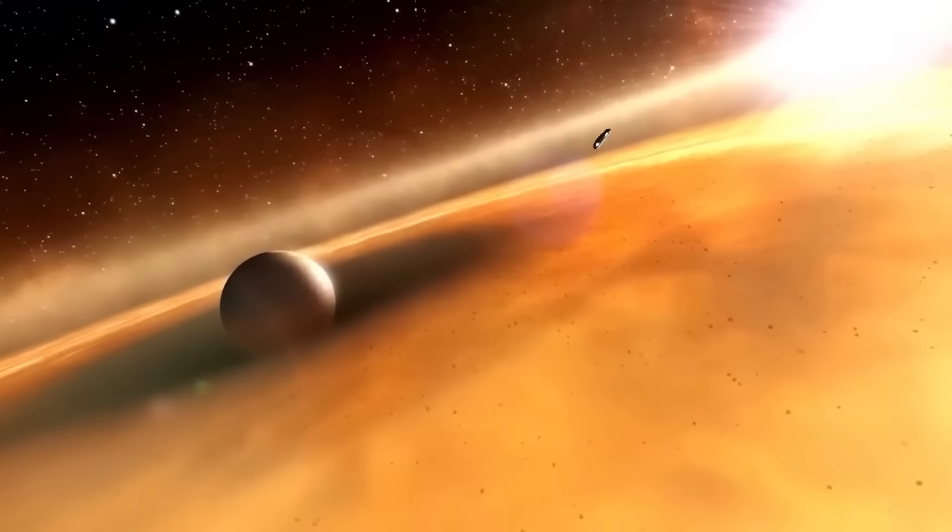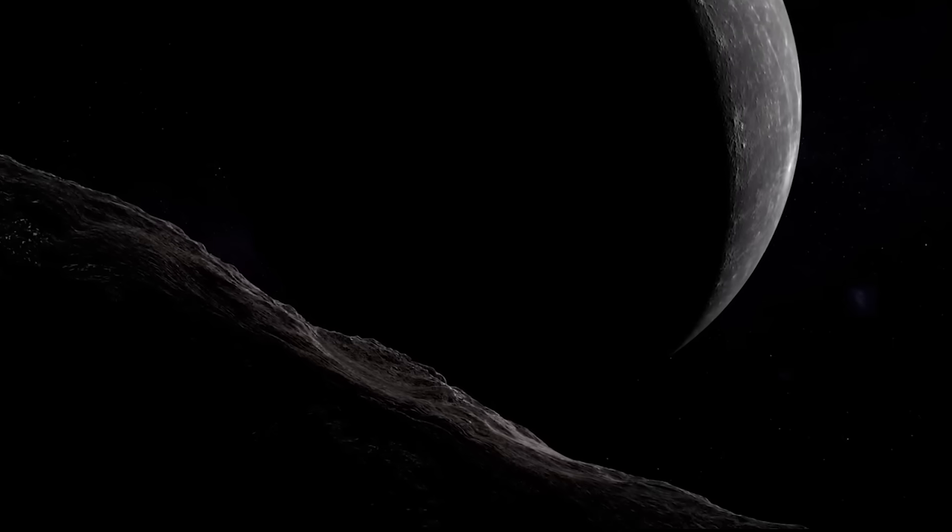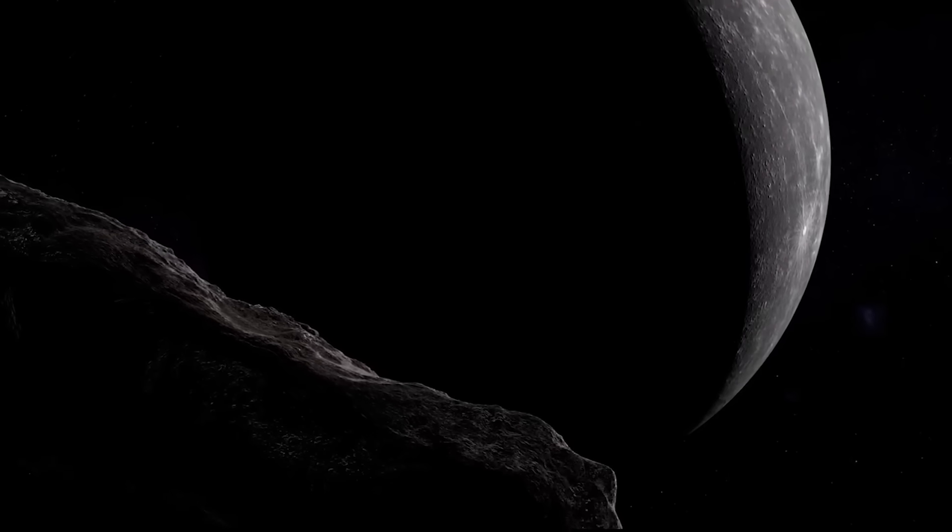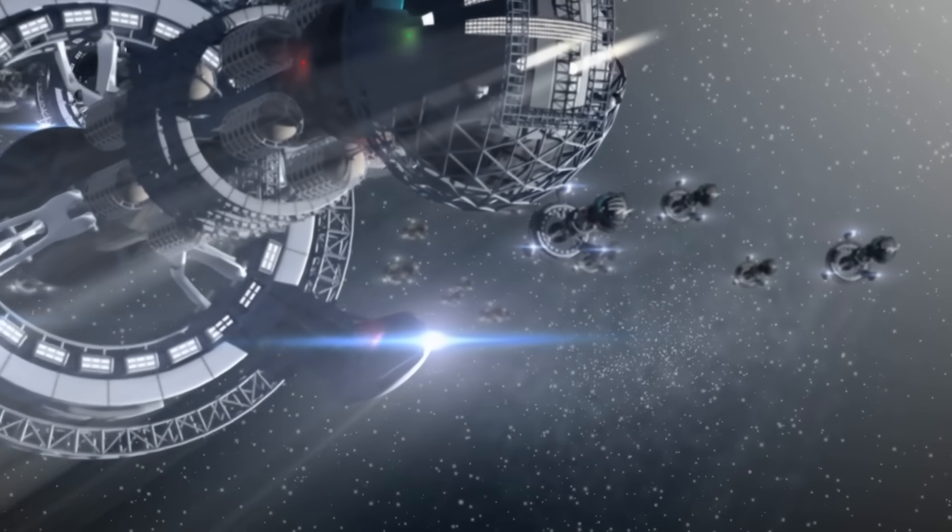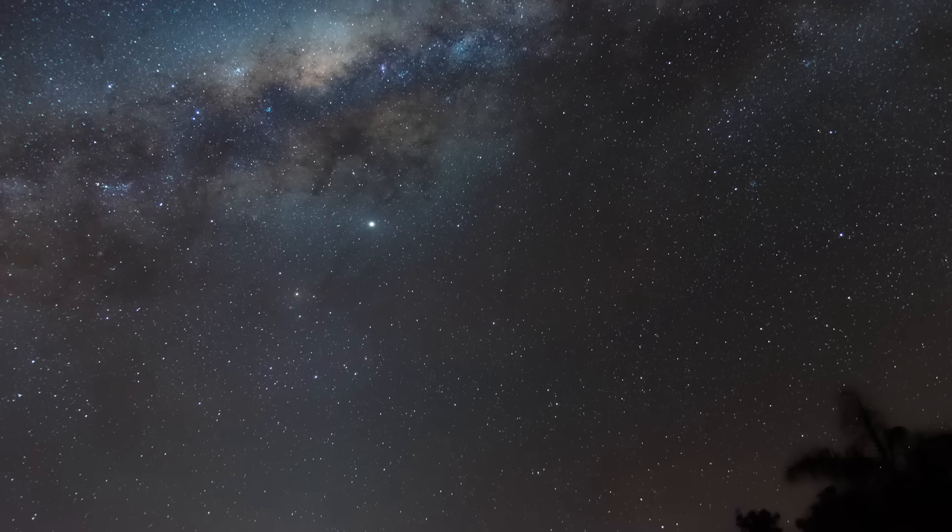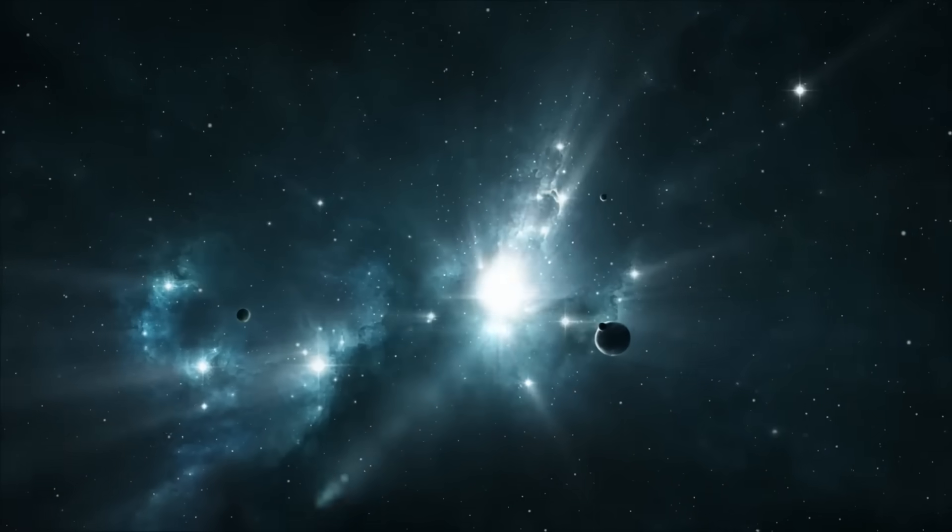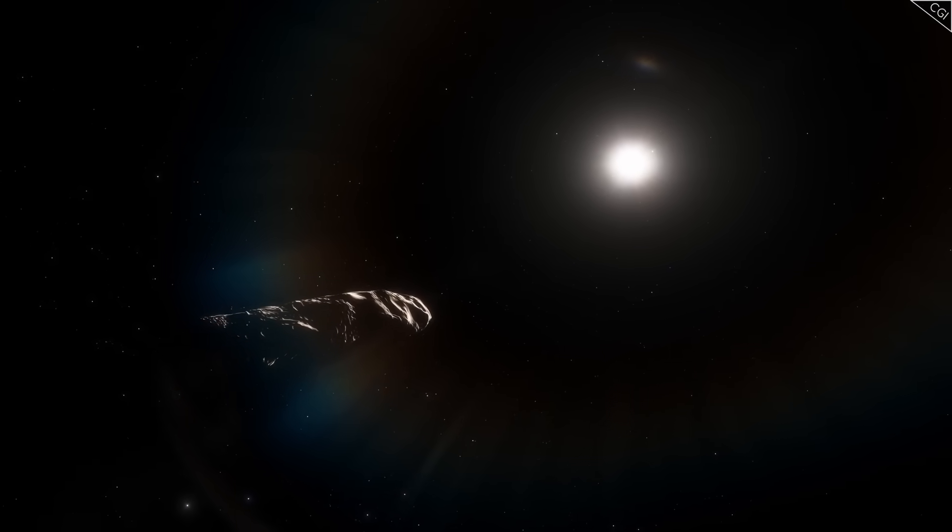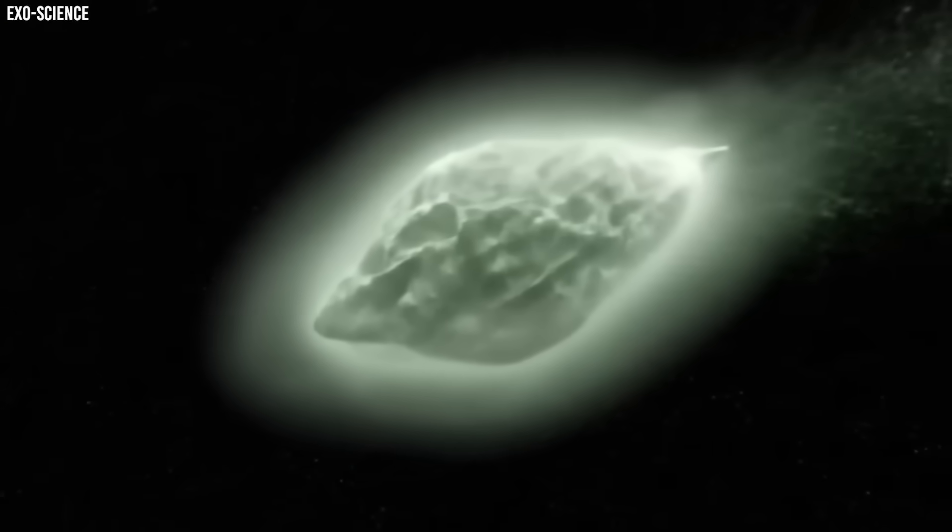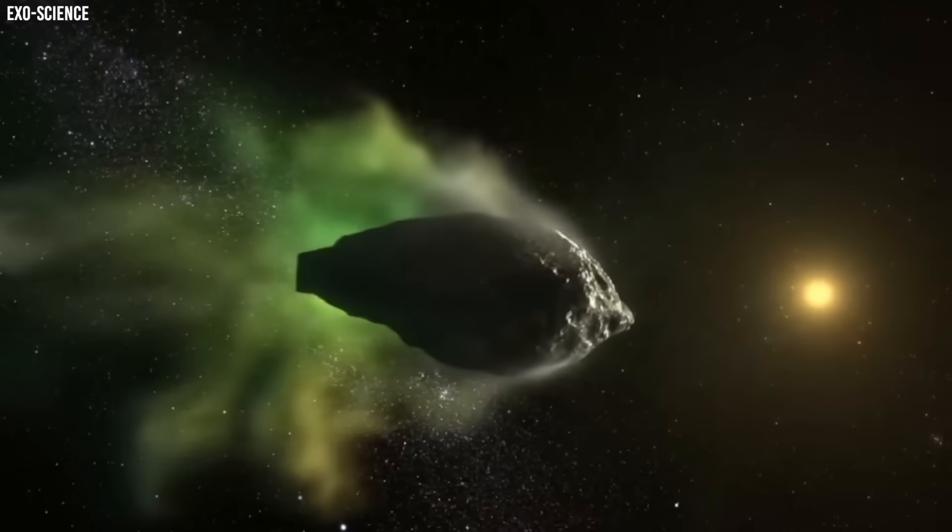It's as if the sun itself can't touch it, as if radiation, gravity, and heat all slide off its surface like light from a mirror. If it's natural, then it's rewriting our definition of what natural even means. If it's artificial, then we've just witnessed the most profound discovery in human history, evidence that we are not the first to walk beneath these stars. Either way, the world we thought we understood has already changed, because the question now isn't whether this object is a comet. That question died the moment it accelerated without a tail.